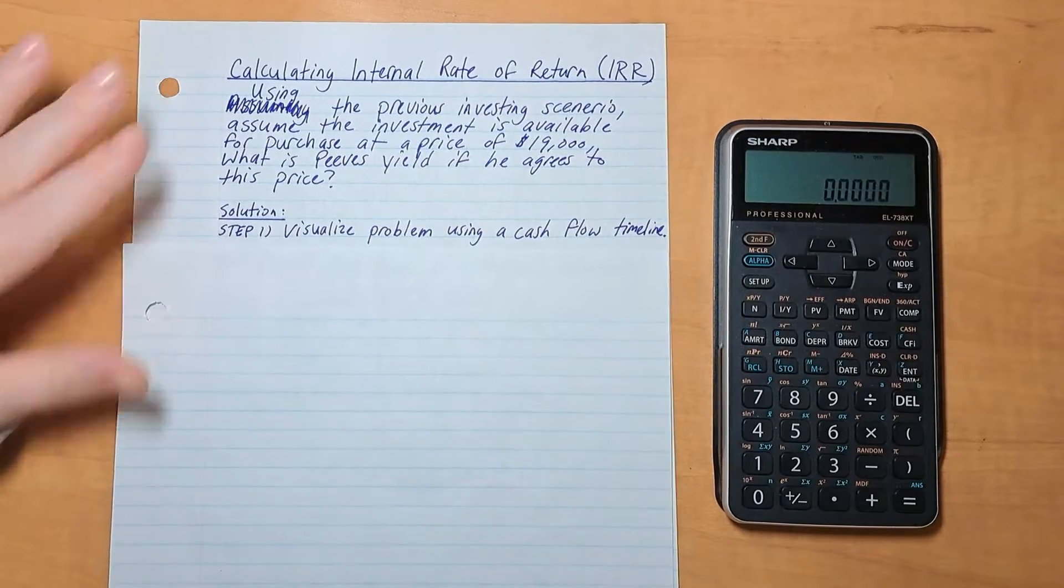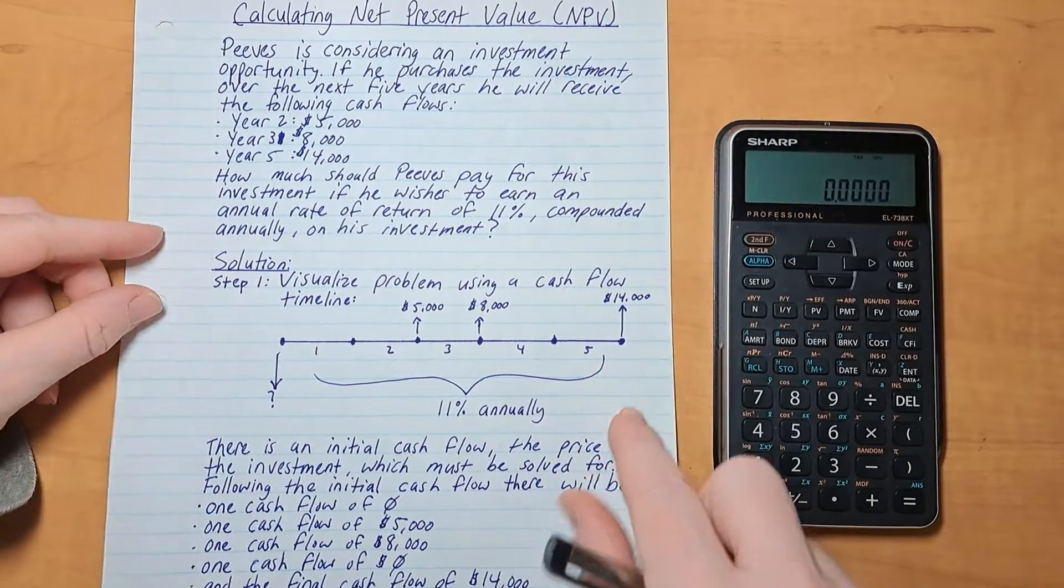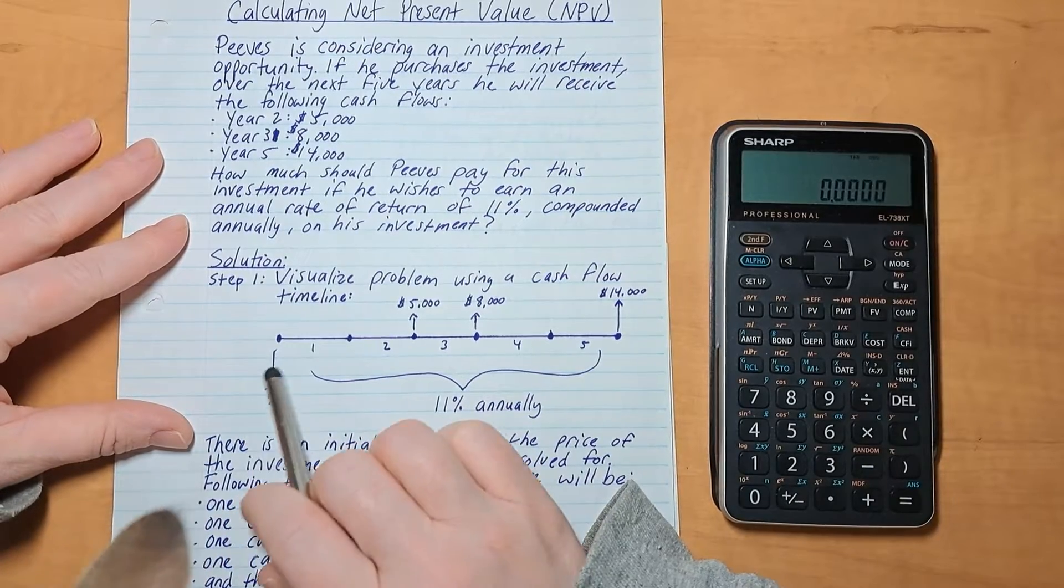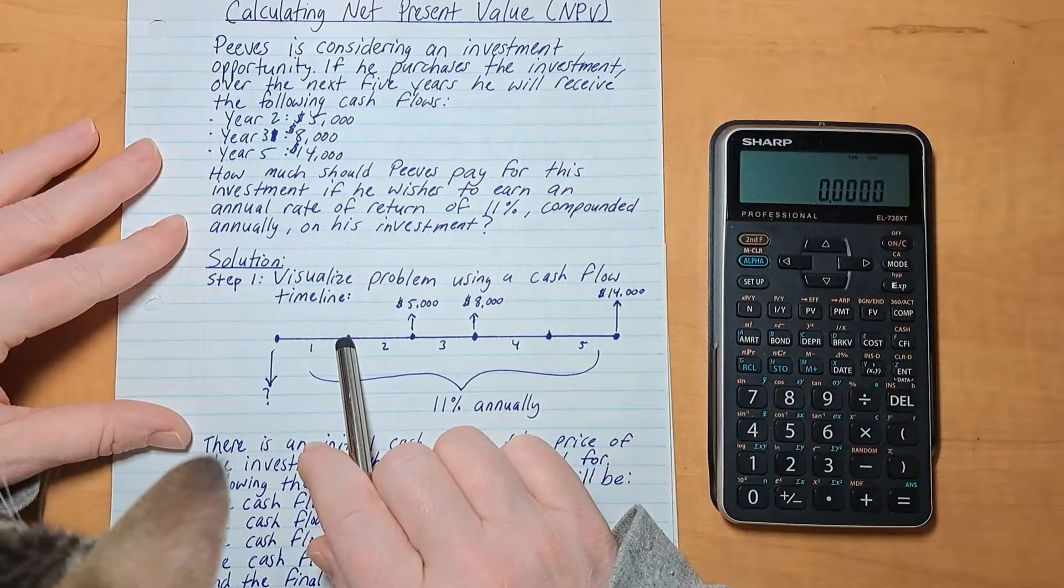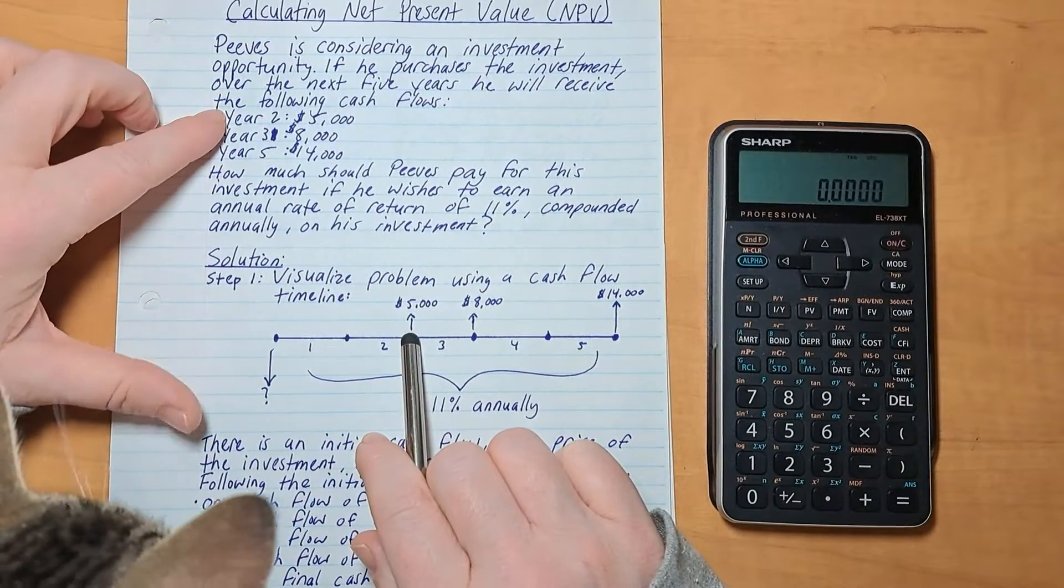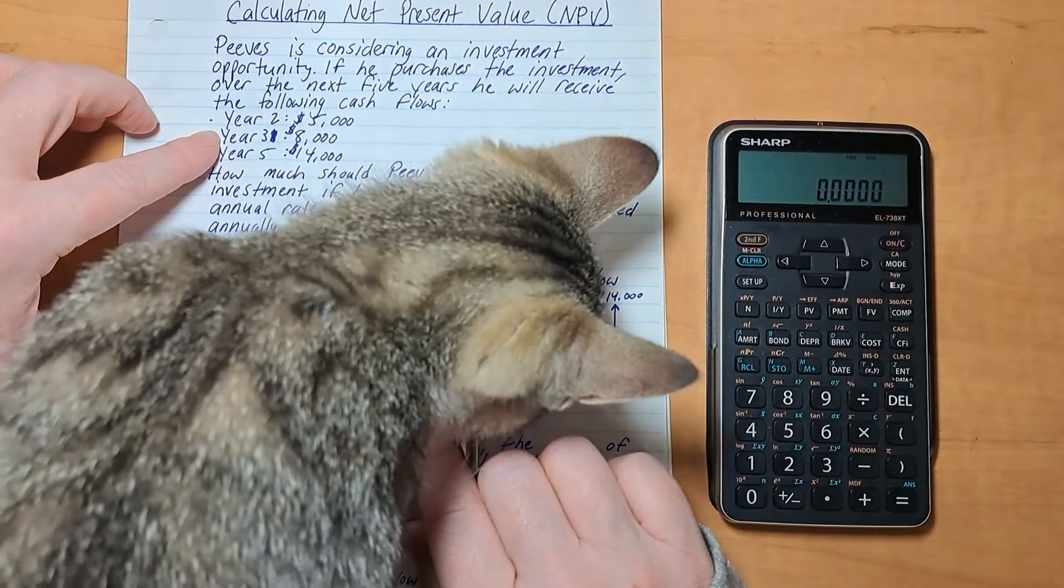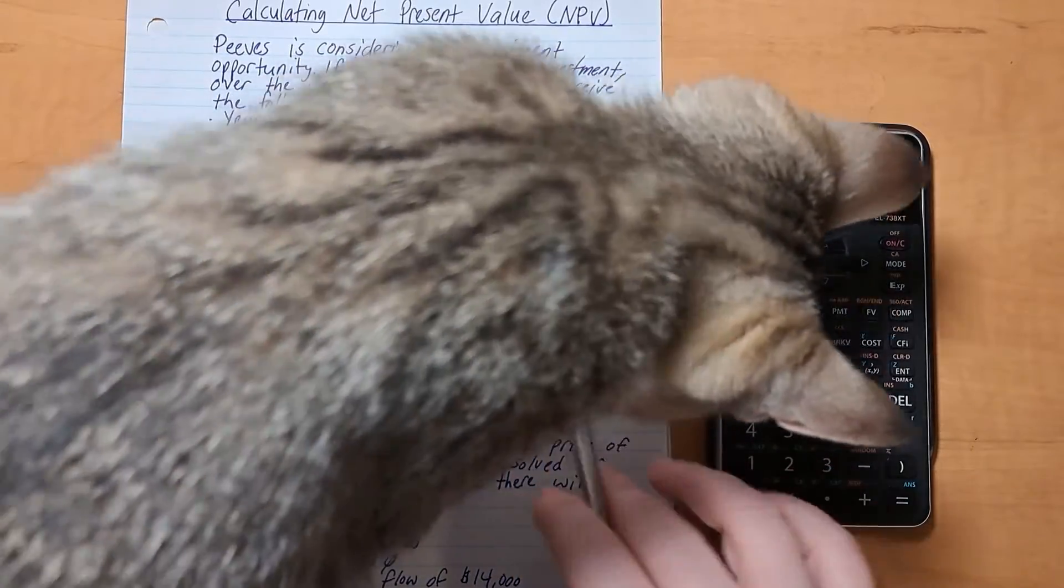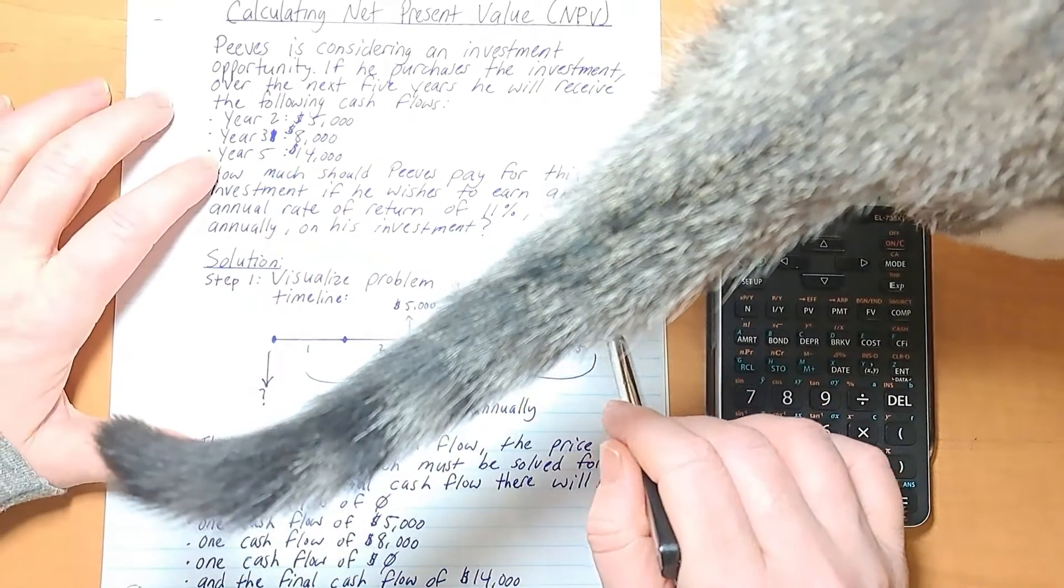Step one is to visualize the problem using a cash flow timeline, which we did here. But now we know this number, it is $19,000. Year 1 he didn't have any return. Year 2 he had $5,000 return. Year 3 was $8,000. Year 4 was 0. And we have a buster here causing trouble. And year 5 was $14,000, was this rate of return.